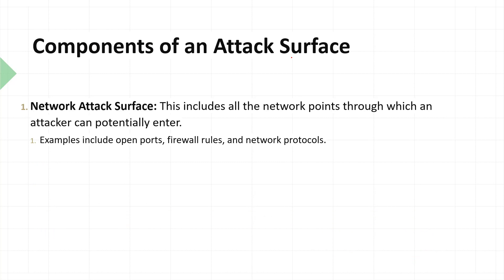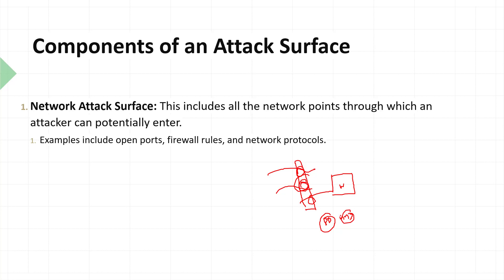Attack surface varies, and we have different types. First is the network attack surface, which includes all network points through which an attacker can potentially enter — depending on what ports are open. For example, if a firewall allows more ports to be traveled through, attackers can use those ports to enter. Keep things simple: only allow the ports you need and block the rest.